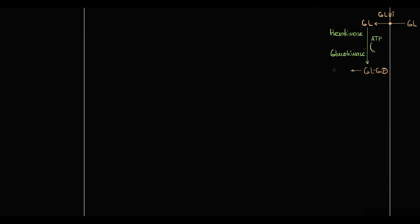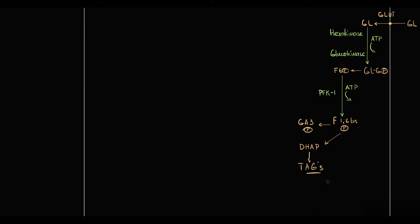Glucose-6-phosphate is converted to fructose-6-phosphate, and fructose-6-phosphate is converted by the major enzyme in glycolysis — phosphofructokinase-1 — to fructose-1,6-bisphosphate. Then fructose-1,6-bisphosphate is cleaved into glyceraldehyde-3-phosphate and dihydroxyacetone phosphate. Dihydroxyacetone phosphate can be used to form triacylglycerols, or it can be converted into glyceraldehyde-3-phosphate. Glyceraldehyde-3-phosphate is then oxidized by glyceraldehyde-3-phosphate dehydrogenase, using NAD as cofactor, to 1,3-bisphosphoglycerate. This reaction results in formation of NADH.